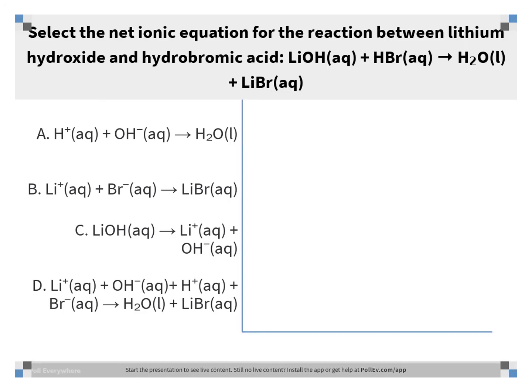The correct answer is A: H⁺(aq) + OH⁻(aq) → H₂O(l). When we break apart everything that is aqueous, we get a complete ionic equation that looks a lot like answer choice D, except LiBr(aq) is broken into ions. Lithium ions and bromide ions appear on both sides, so we cross them off as spectator ions, and we're left with H⁺ and OH⁻ coming together to make water. You should be able to answer this quickly because lithium hydroxide is a strong base and hydrobromic acid is a strong acid.